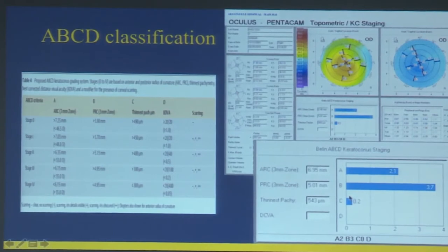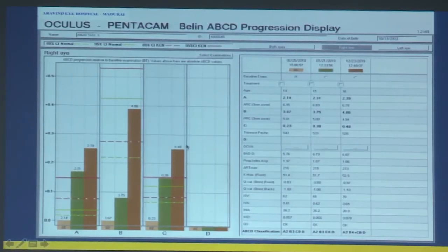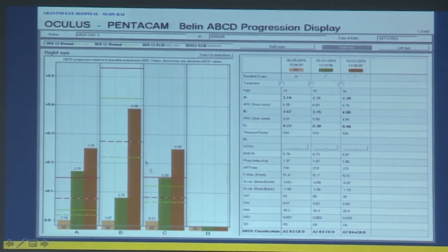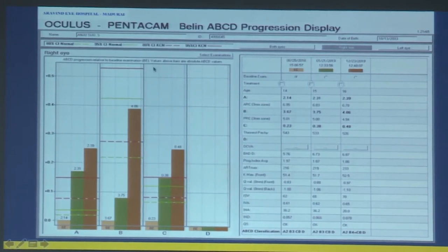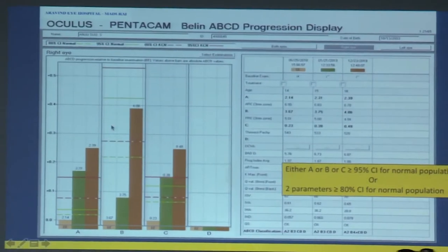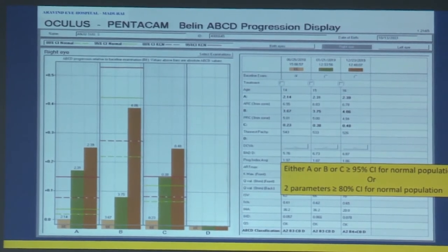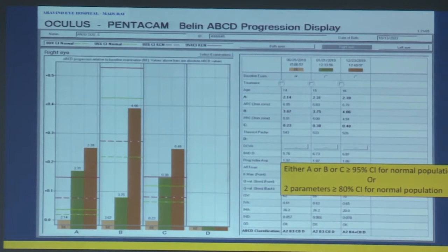The purpose of Belin's ABCD classification was to document progression. ABCD display is currently only available in Pentacam. The progression map shows baseline and up to eight consecutive examinations plotted with bars. Belin recommends that if either A, B, or C exceeds the 95% confidence interval for normal population, it is definite progression. If two parameters exceed the 80% confidence interval, it is also definite progression.